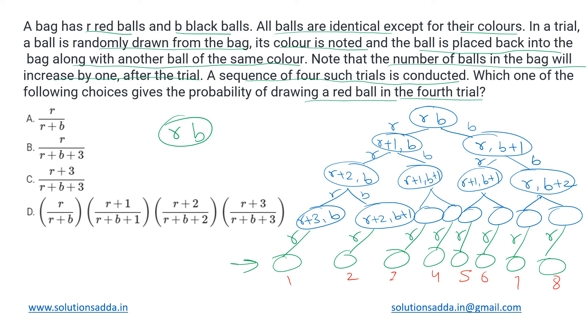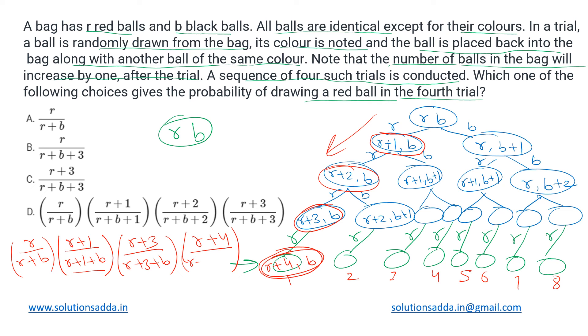For the first branch, the most extreme branch, the result of the last state would be r plus four and b. For this branch, in the first time, the probability of drawing red was r upon r plus b, because the initial configuration was r plus b balls. In the second trial, the configuration gave r plus one upon r plus one plus b. Moving on to the third trial, it will be r plus two upon r plus two plus b. Then the fourth trial will be r plus three upon r plus three plus b.